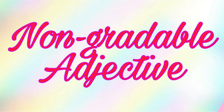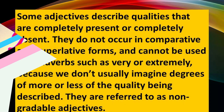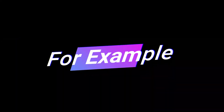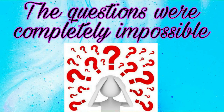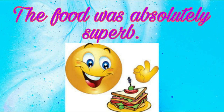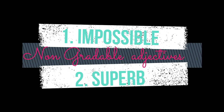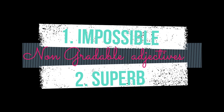What are non-gradable adjectives? Some adjectives describe qualities that are completely present or completely absent. They do not occur in comparative and superlative forms and cannot be used with adverbs such as very or extremely, because we don't usually imagine degrees of more or less of the qualities being described. They are referred to as non-gradable adjectives. For example: 'The questions were completely impossible.' 'The food was absolutely superb.' So here, words like impossible and superb signify the non-gradable adjectives.